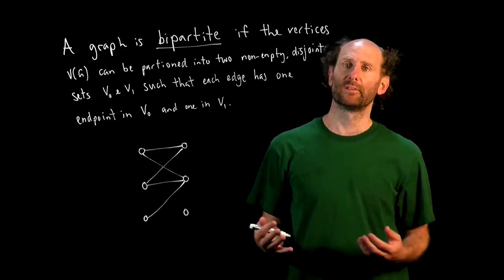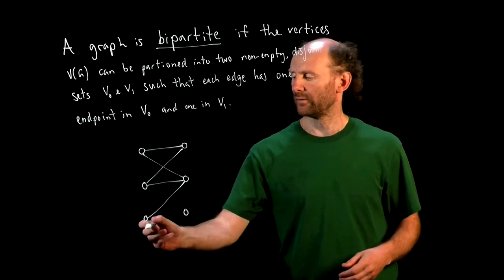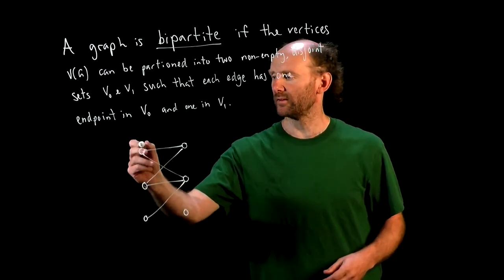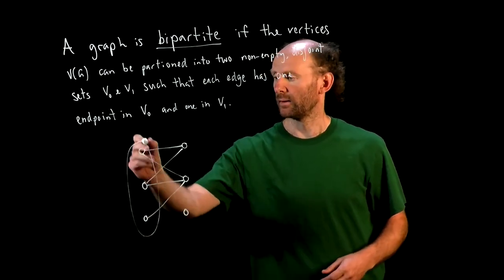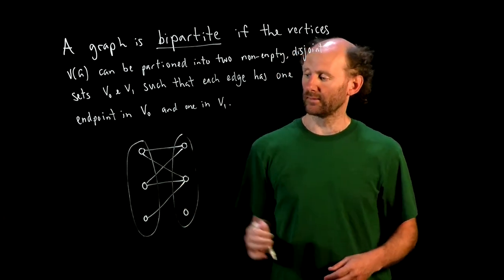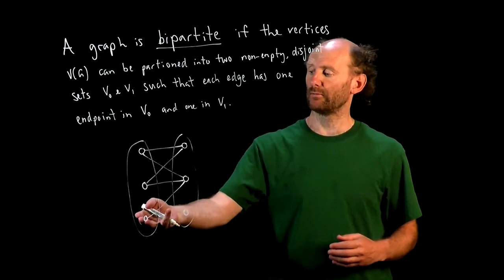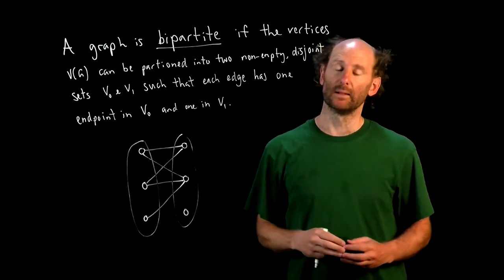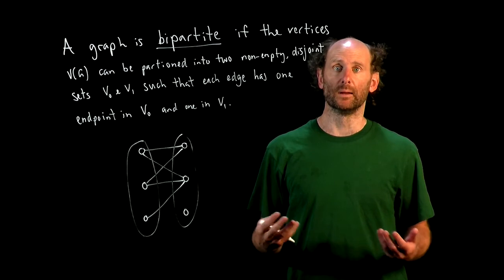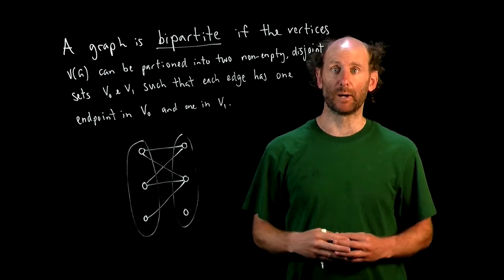Let's look at an example. So here's a graph with six vertices. If we partition them into two sets, this side and this side, then we see that all edges in the graph have one endpoint in one set V0, the other in the set V1, and so it's clearly bipartite.